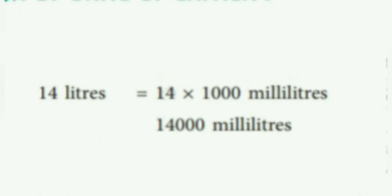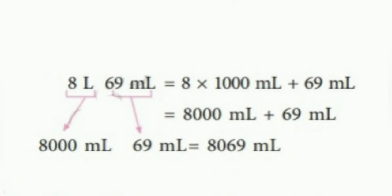Let's see the next one. Here we have 8 liters 69 milliliters. Since 1 liter equals 1000 milliliters, 8 liters equals 8000 milliliters—8 multiply 1000. Then 69 we have to add: 8069 milliliters, 8000 plus 69 milliliters.